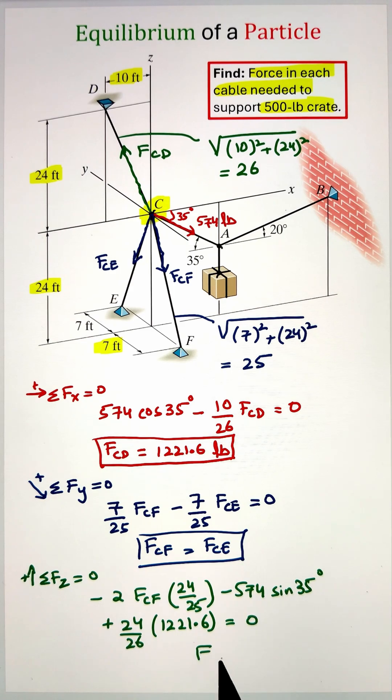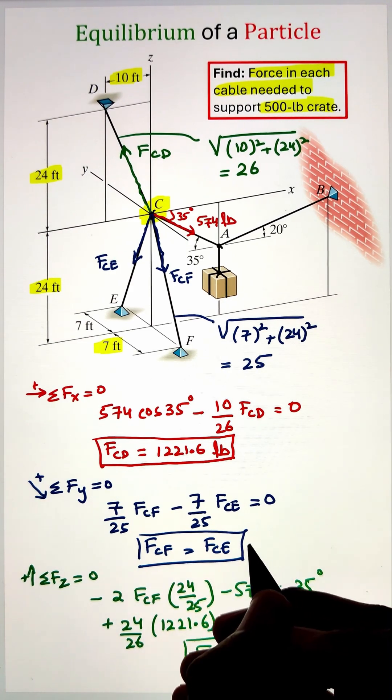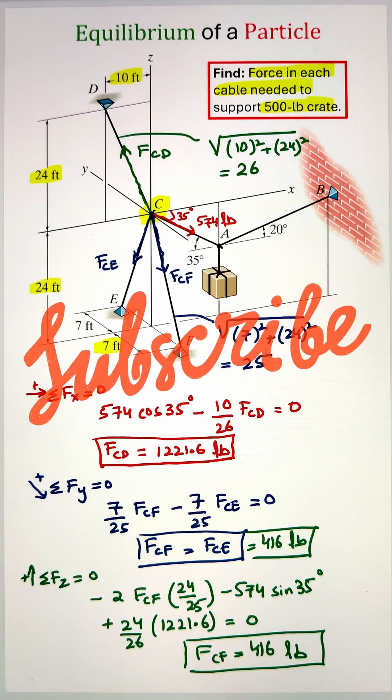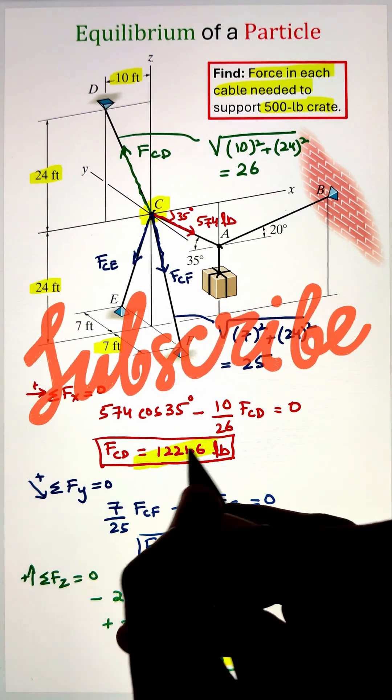Simplifying, we can calculate the value of FCF, that is coming as 416 pounds. Since that is equal to FCE, that value is also 416 pounds.